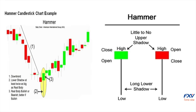The bullish hammer has a small candle body and an extended lower wick, showing the rejection of lower prices. The other pattern traders look out for is the inverted hammer, which is an upside-down bullish hammer.